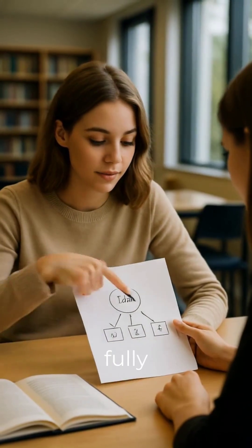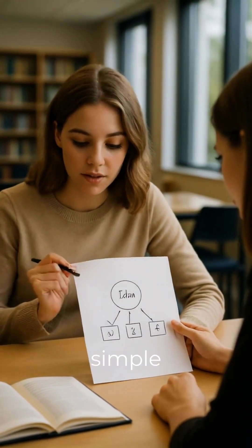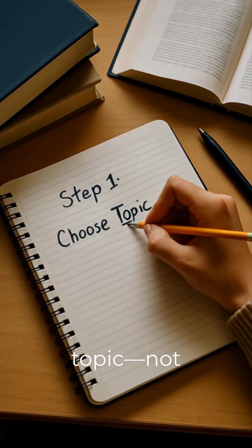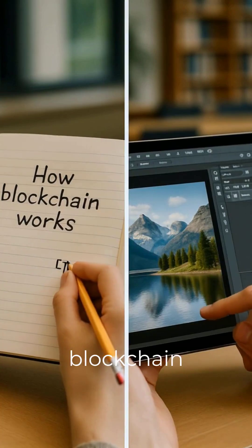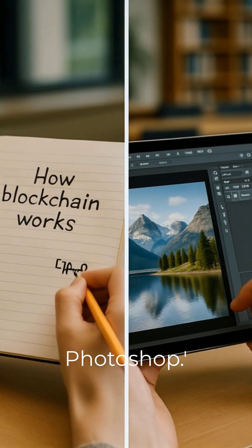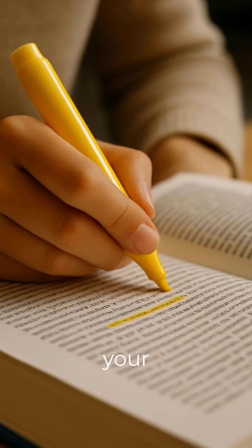You understand something fully only when you can teach it in simple language. First, pick one specific topic, not something broad. Examples like how blockchain works or basics of Photoshop. A narrow topic helps your brain focus.